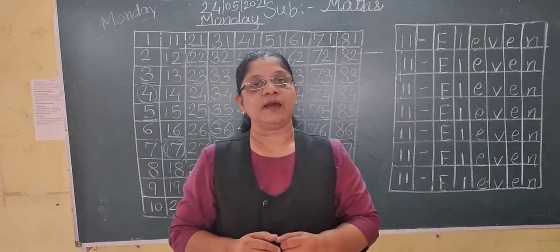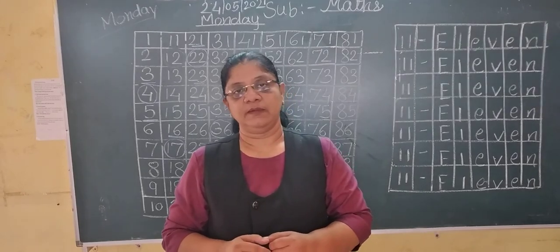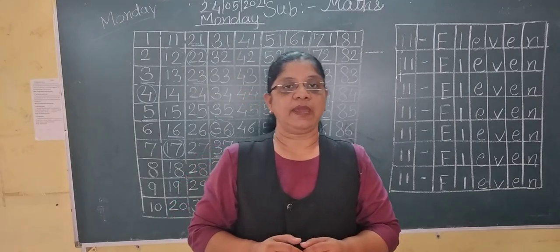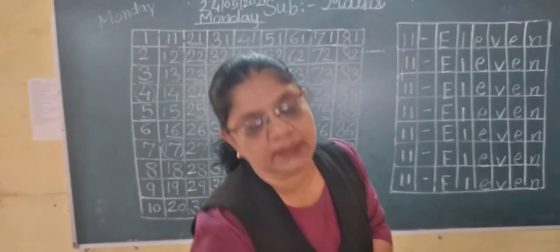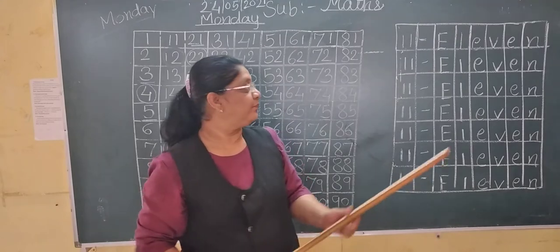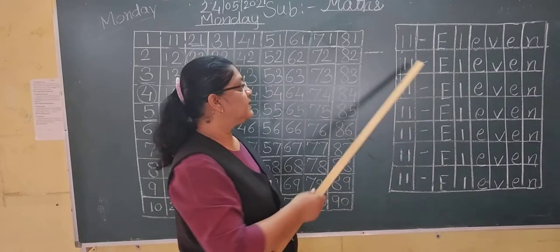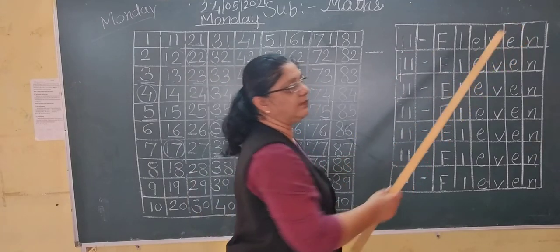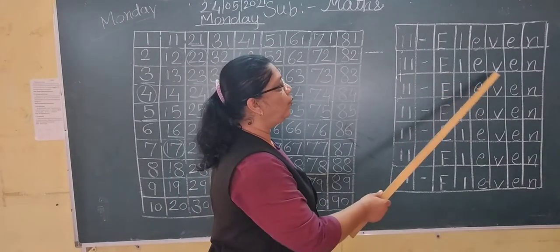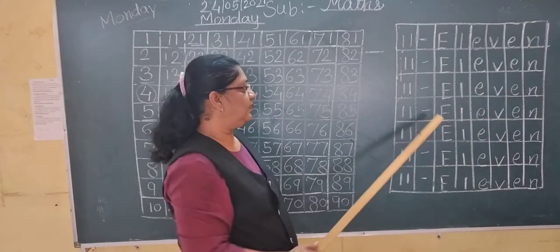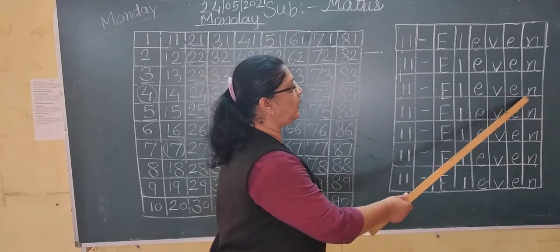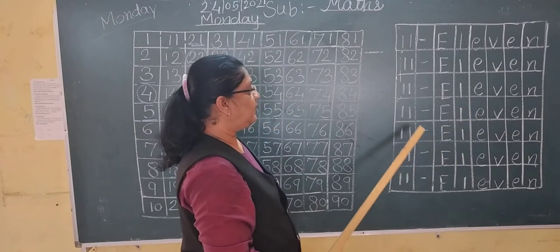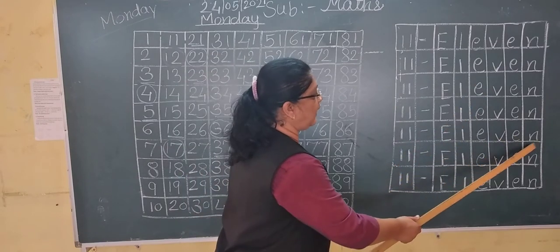Nine: N-I-N-E, 9. Ten: T-E-N, 10. Okay, students. Now see the number eleven — say eleven. 1-1, eleven. E-L-E-V-E-N, 11.